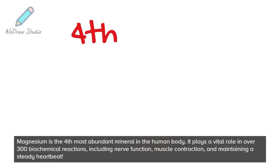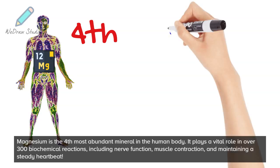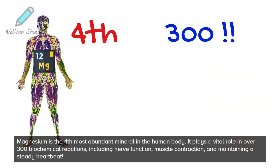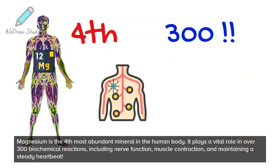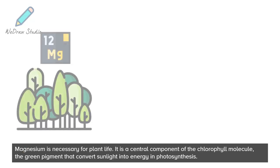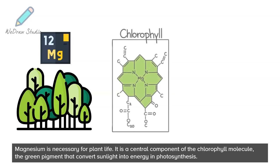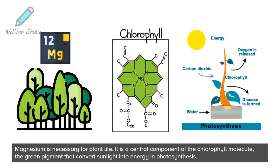Magnesium is the fourth most abundant mineral in the human body. It plays a vital role in over 300 biochemical reactions, including nerve function, muscle contraction, and maintaining a steady heartbeat. Magnesium is also necessary for plant life — it is a central component of the chlorophyll molecule, the green pigment that converts sunlight into energy through photosynthesis.